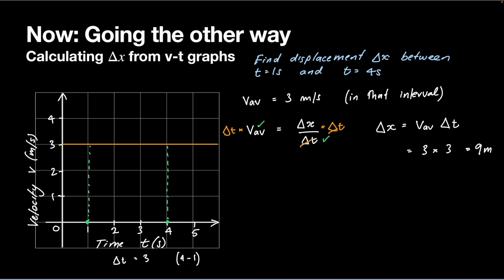Before we move on, we're going to think about what interpretation geometrically this thing we just calculated actually has. We multiplied two numbers together, a three and a three. What does that mean on our picture? We basically multiplied this distance along here by this distance up here. That's the delta t, three across the bottom, and the average velocity three is the height.